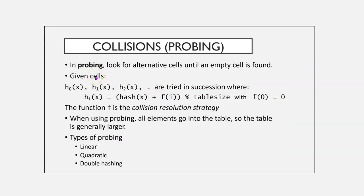The other option would be using collision probing, and that's with a closed table. In probing, we look for alternative cells until an empty cell is found. Given cells H0 through Hn, they are tried in successive sections where H of i equals x, and it equals hash of x plus F of i, which is a secondary function, which is our collision resolution strategy. When using probing, all elements go into the table, so the table is generally larger. Some of the types of probing could be linear, quadratic, and double hashing.